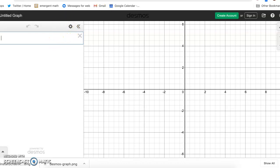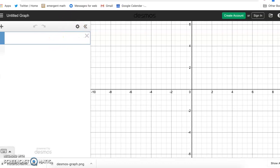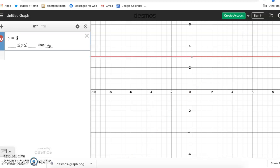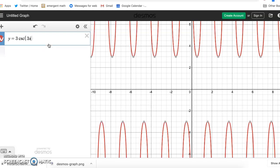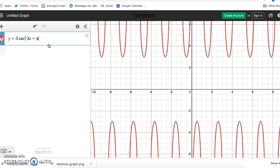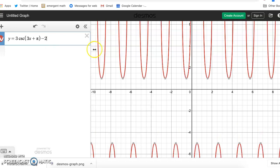Alright, so let's find the range. Let's just start by putting in the function to see how it works. So y equals three times the cosecant of three x plus pi, close parentheses, minus two. So this is the function that we're looking at.